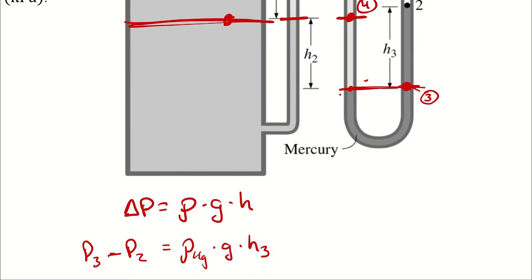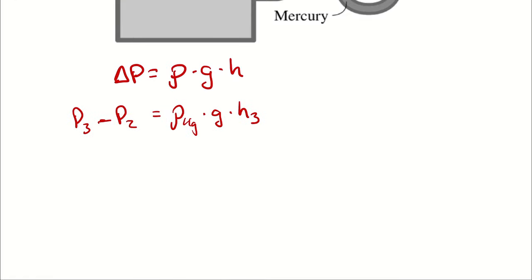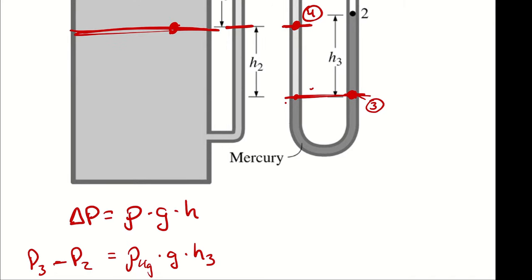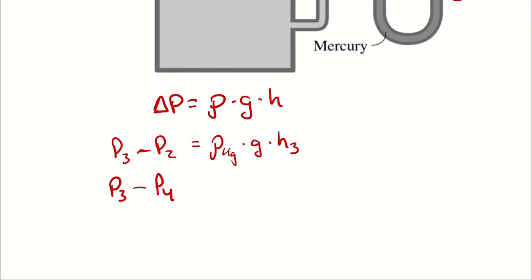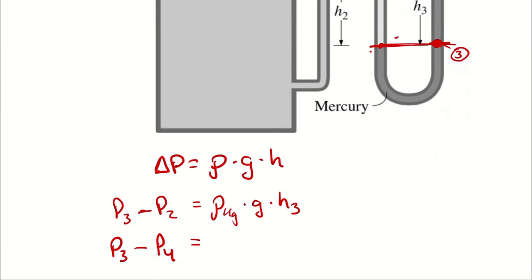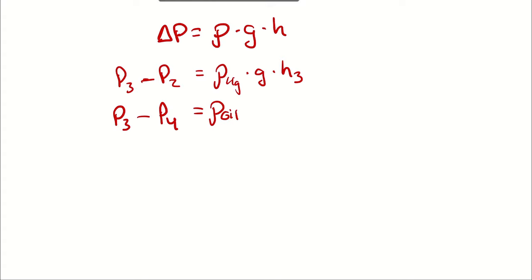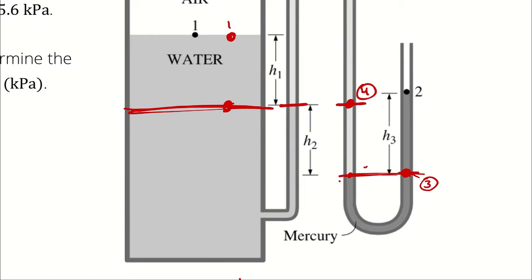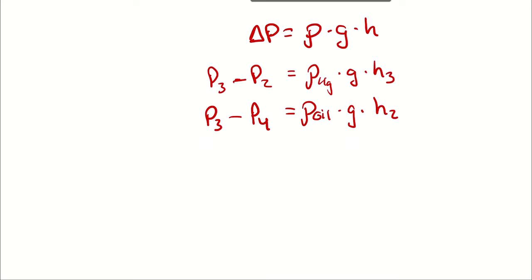The next Pa equation is going to be from three up to four. So I can say P3 minus P4, because again, I'm going from lower to top, from higher pressure to lower pressure, always in these deltas. I'm saying density of oil this time times gravity times the relevant height there, which I believe is H2. It is indeed, and then one more Pa equation to step from four, which, remember, is the same as over here, up to one. That's going to be P4 minus P1, density of water this time times gravity times H1.